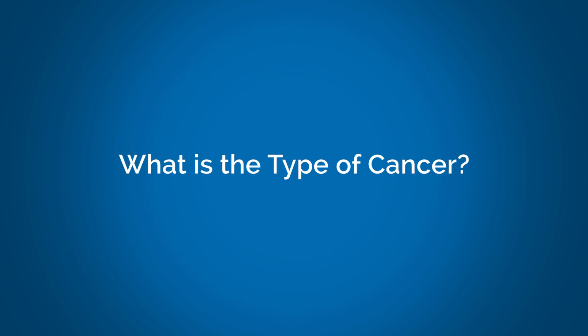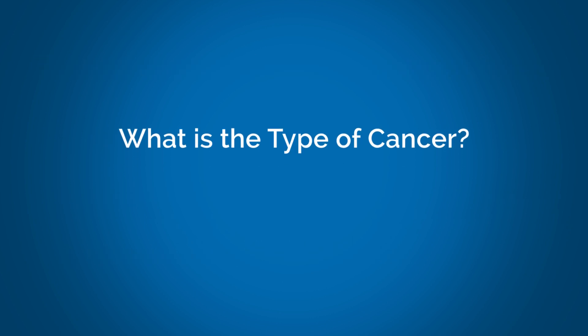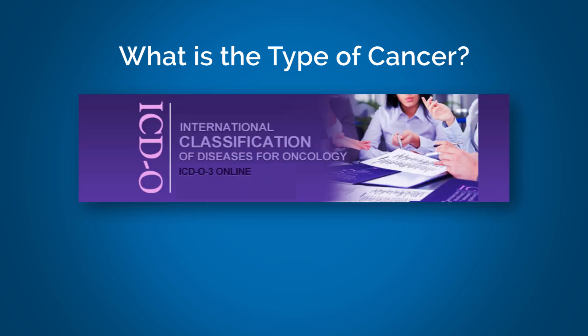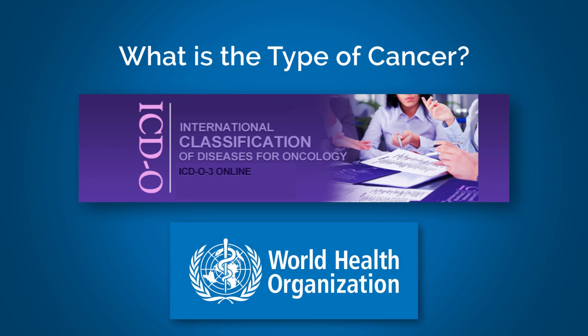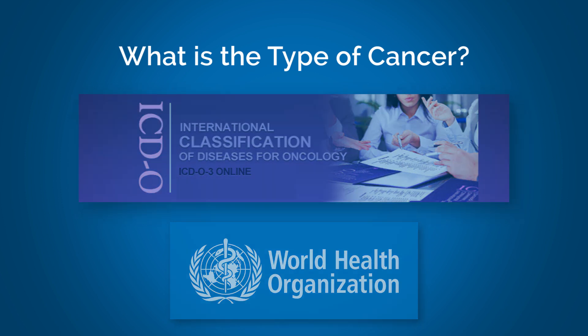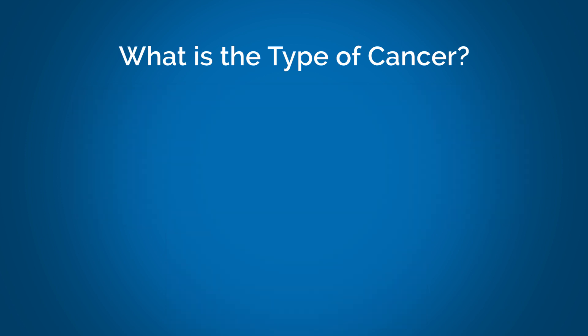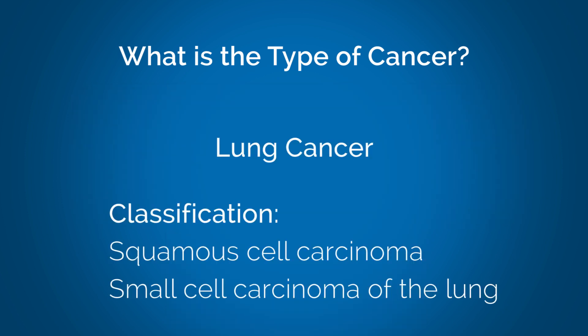What is the type of cancer? The type of cancer is classified using the International Statistical Classification of Disease for Oncology, which was developed by the World Health Organization. This classification describes what the cancer is. For instance, if it's a lung cancer, it is classified as squamous cell carcinoma or a small cell carcinoma of the lung.